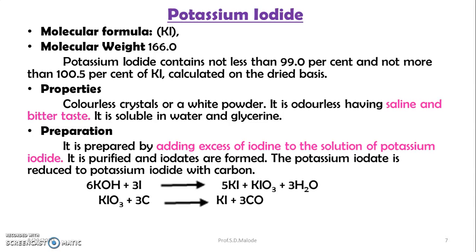Properties: Potassium iodide is colorless crystals or white powder. It is odorless with a saline and bitter taste. It is also soluble in water and glycerin. Preparation: It is prepared by adding excess of iodine to a solution of potassium hydroxide. It is purified and iodates are formed, then the potassium iodate is reduced to potassium iodide with carbon.